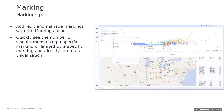The new markings panel enables adding, editing, and removing markings, both in the installed client and the web client. You can now also quickly see the number of visualizations using a specific marking or limited by a specific marking, with the ability to directly jump to that visualization. Markings in Spotfire are a visual representation of user-selected data in visualizations, providing a powerful way to interact with and explore data. Markings can be used to perform a variety of operations such as highlighting selected data points, filtering data, and linking multiple visualizations together.